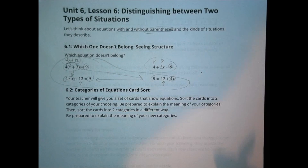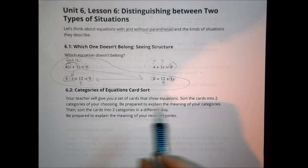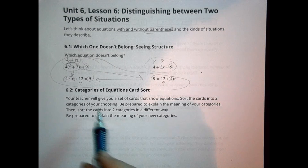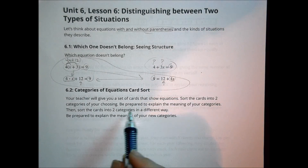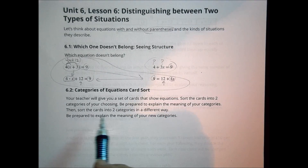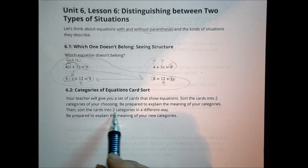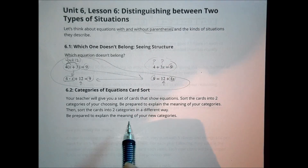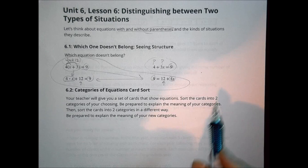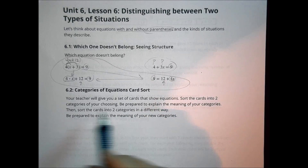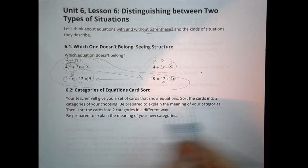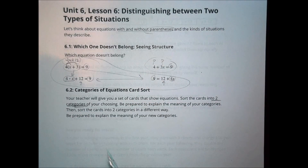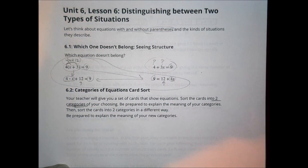In your class today, your teacher is going to give you a set of cards that show equations. You want to sort those cards into categories of your choosing and be prepared to explain the meanings of your categories. Then sort the cards into two categories in a different way and be ready to explain your meaning. Put them into two categories any way you like, just have an explanation for why.